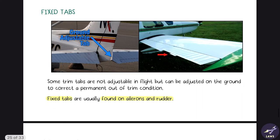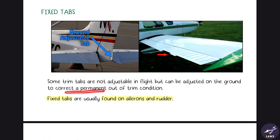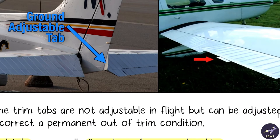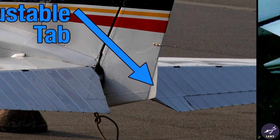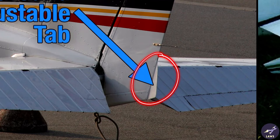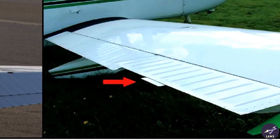Fixed tabs are trim tabs that are not adjustable in flight but can be adjusted on the ground to correct a permanent out-of-trim condition. Such fixed tabs are normally found on the aircraft rudder and ailerons.